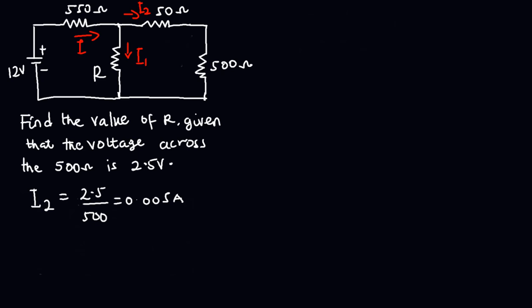Knowing I2, we can find the voltage drop across the 50 ohms resistor. That will be equal to I2, which is 0.005, times the 50 ohms. And this will give us a value of 0.25 volts.